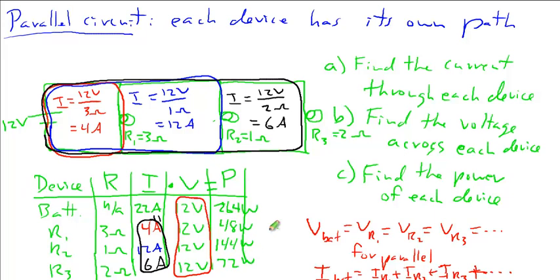Same idea as we saw with current. The sum of all these powers is going to equal the battery power. The battery is powering these three light bulbs. Whatever the power is of the light bulbs, add them up, and that's how much power the battery must have to be able to power those light bulbs.